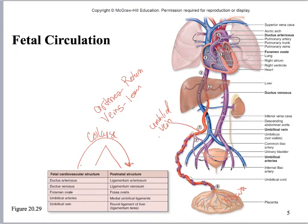Coming off of the iliac arteries we have the two umbilical arteries — you can see them going this way — and they're basically going to form little branches which are your blue umbilical arteries going towards the placenta. They're leaving the baby's heart and going towards the placenta where exchange occurs between the maternal blood and the fetal blood. The umbilical vein, which we're going to color blue, is bringing oxygenated, nutrient-rich blood up. Normally this would go through the hepatic portal system.